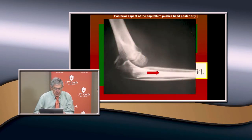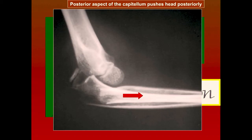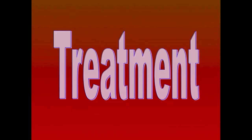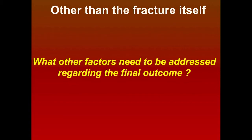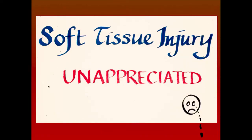Here's a good example of a head that occurred posteriorly, probably during the process of reduction — you can see it back here posteriorly. Now, beyond the fracture itself, other factors need to be addressed: there's usually a lot of unappreciated soft tissue injury associated with these fractures, which can lead to stiffness. You need to warn patients beforehand that even though it's a small fracture, they may lose some motion — though they'll usually maintain a functional range of motion.